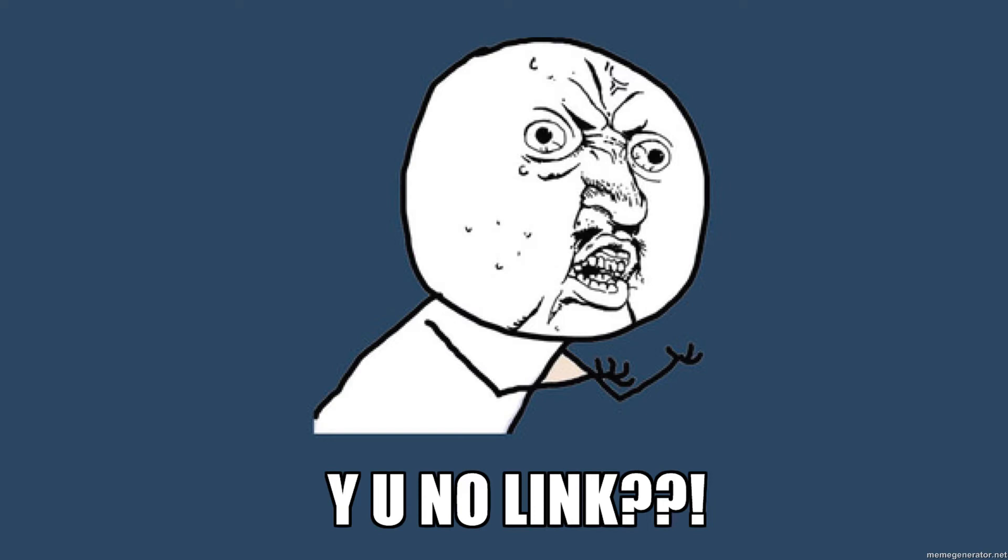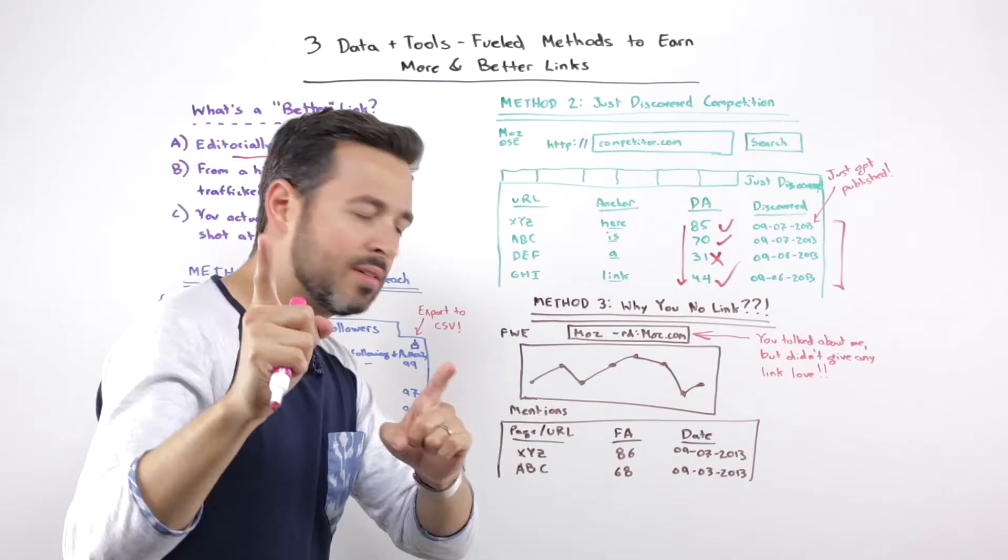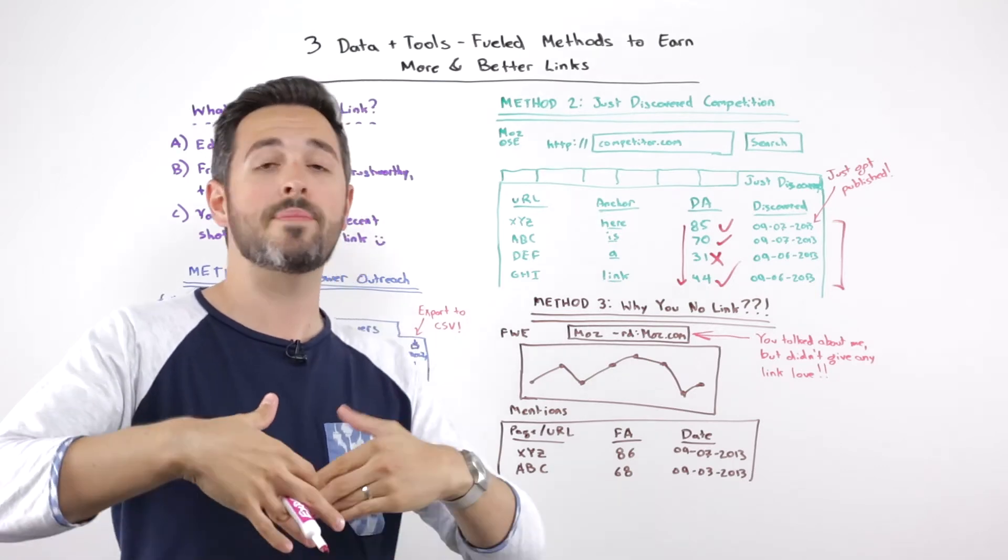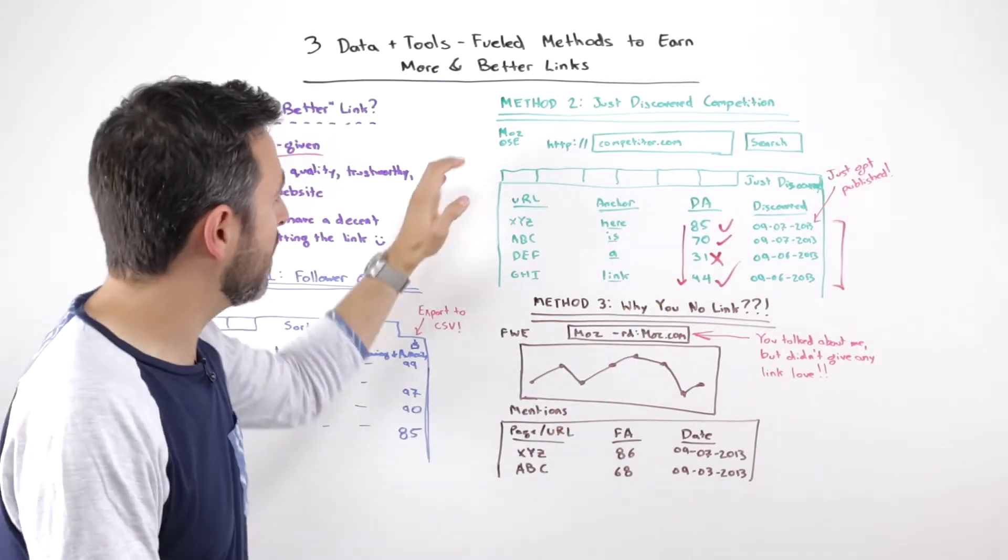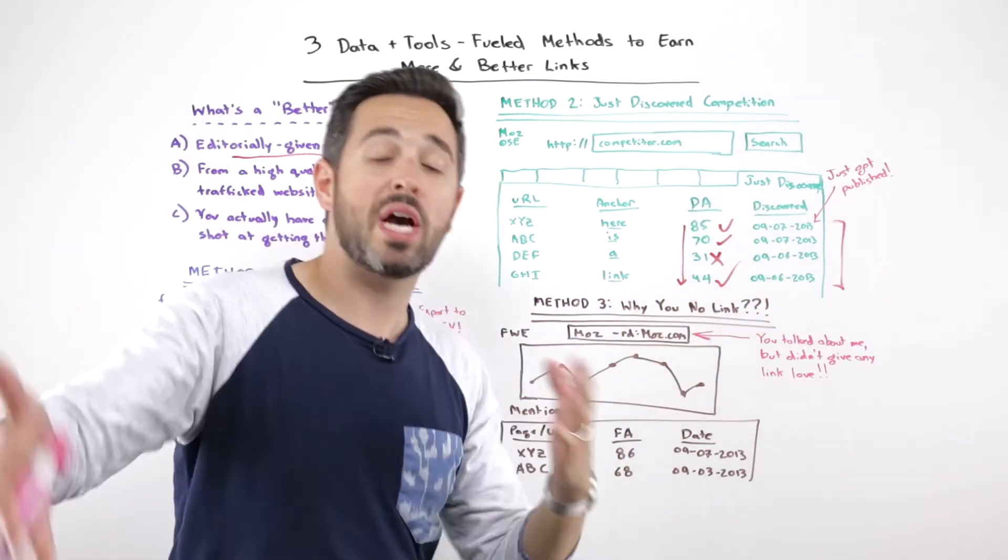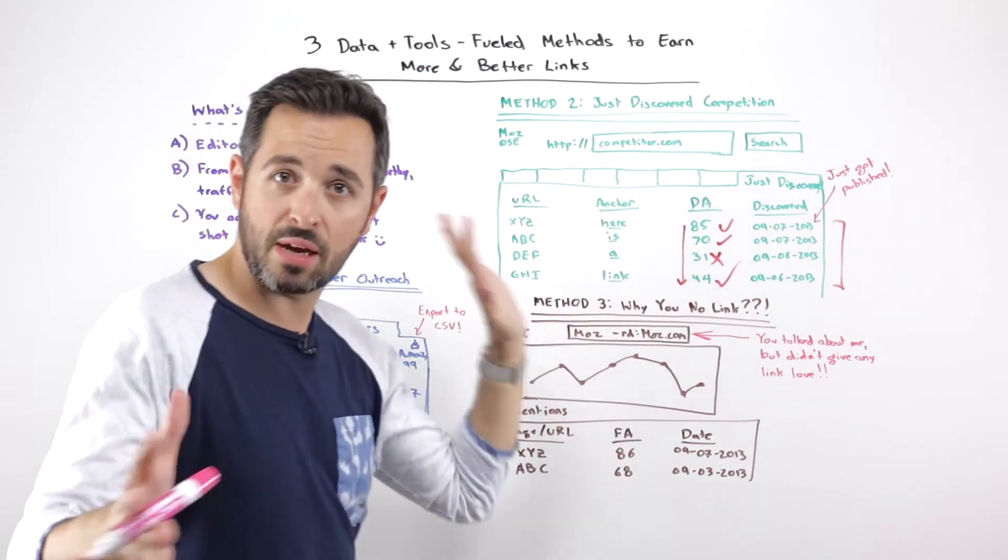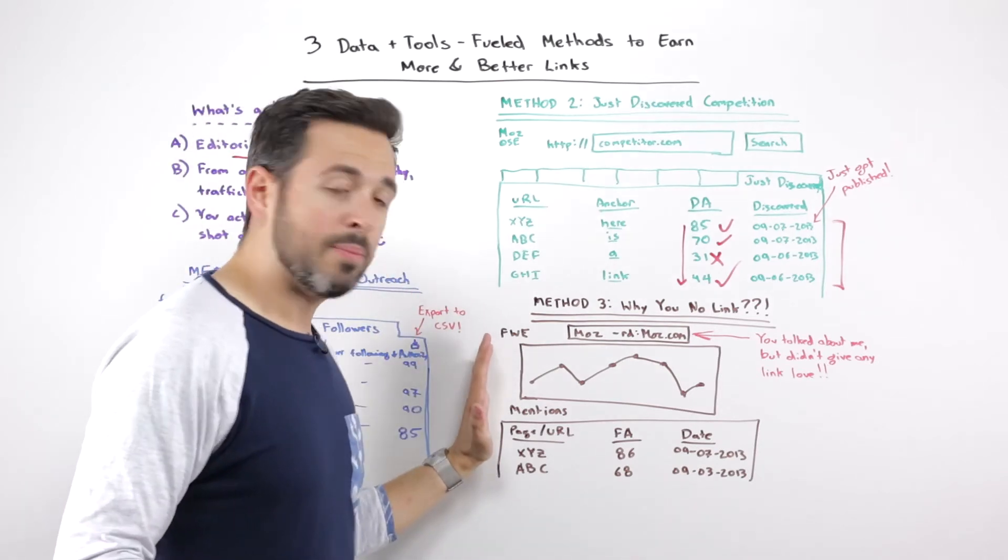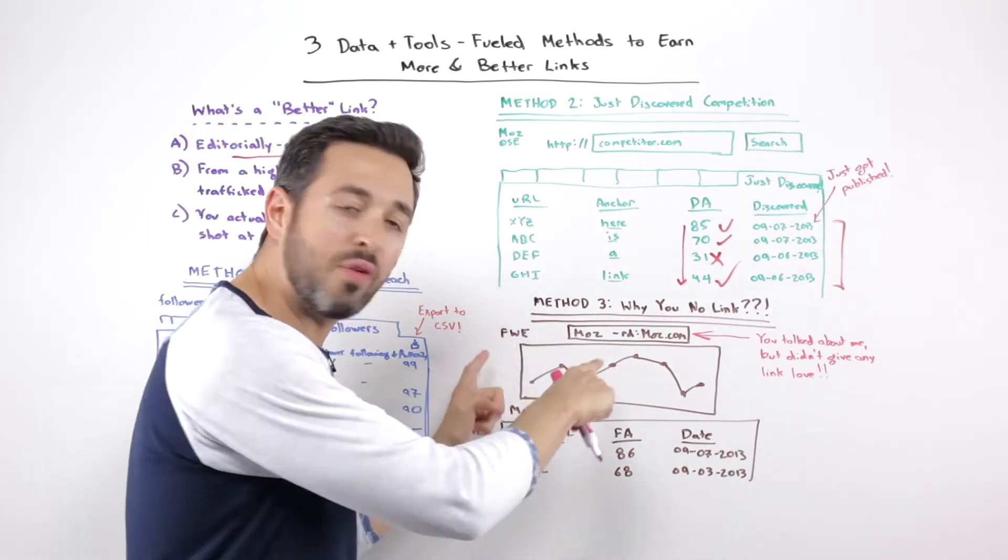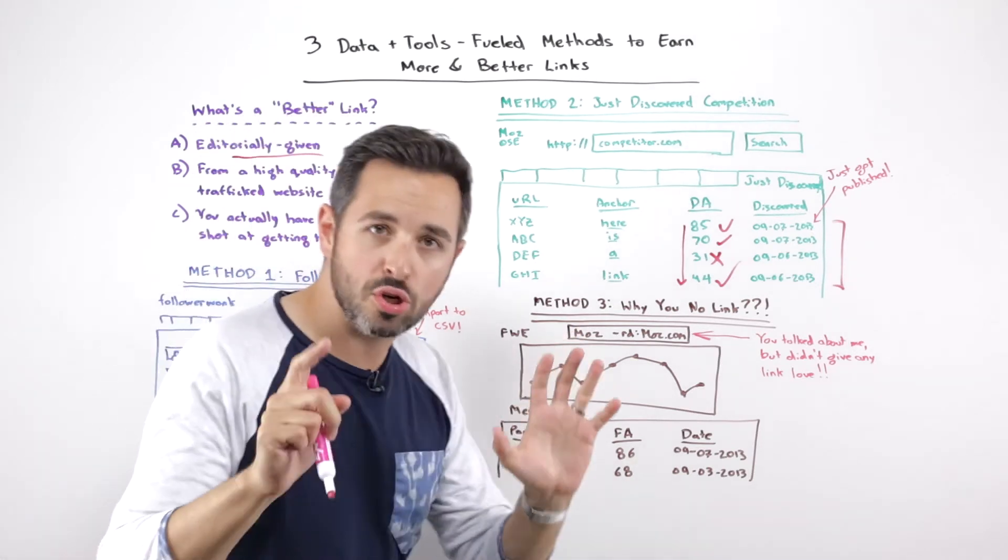Why you no link? Why? Show you what I'm talking about. So this is Fresh Web Explorer. You could use another service. You could use mention.net. And by the way, I don't mean to say that Open Site Explorer is the only way to do this. You could use Majestic or something like that for this same thing. If you're not a Moz subscriber, but assuming you are, all three of these are part of your subscription. So Fresh Web Explorer, I can go in and search for, this is key.